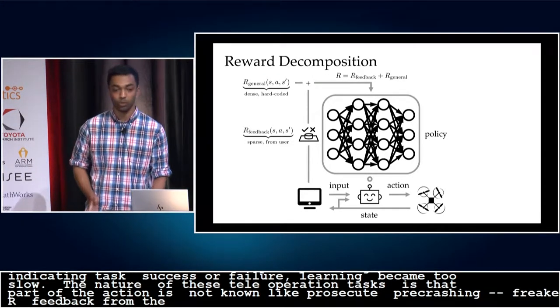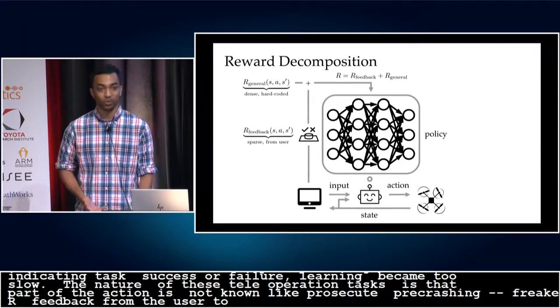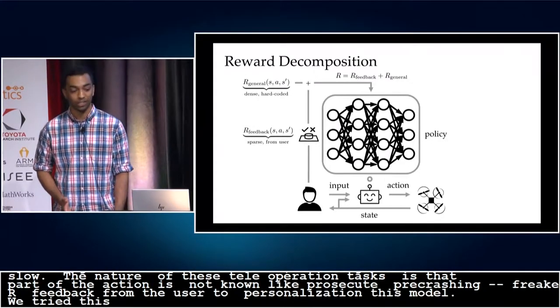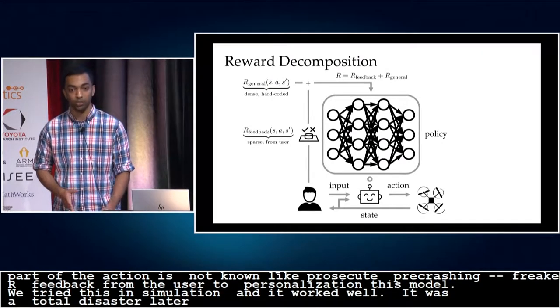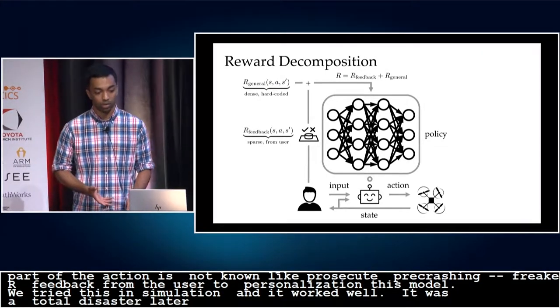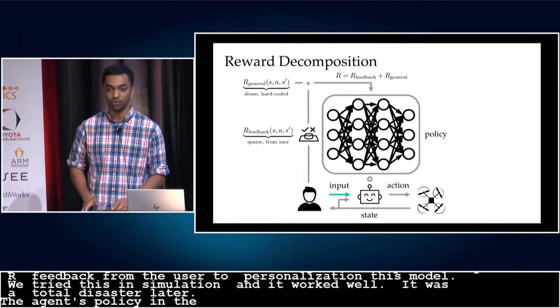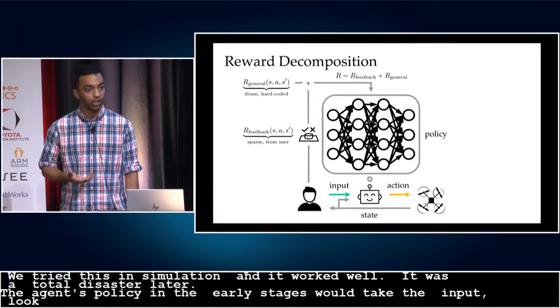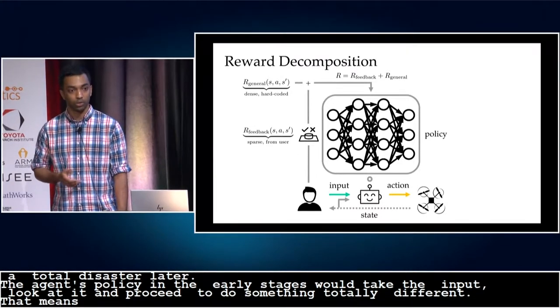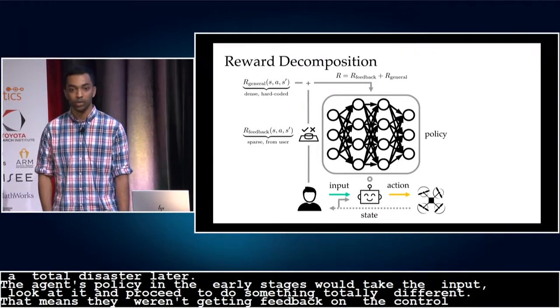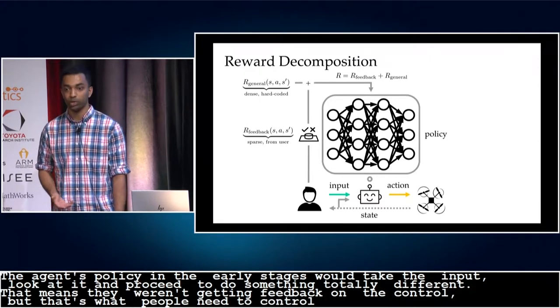We tried this in simulation, and it worked really well. But then we tested it with real human pilots, and it was a total disaster. The agent's policy, especially during the early stages of training, would take the user's input, look at it, and proceed to do something totally different. That meant the users weren't getting any feedback on their control input. But that's exactly what people need in order to correct their input over time. So their input ended up becoming more and more uninformative over time.